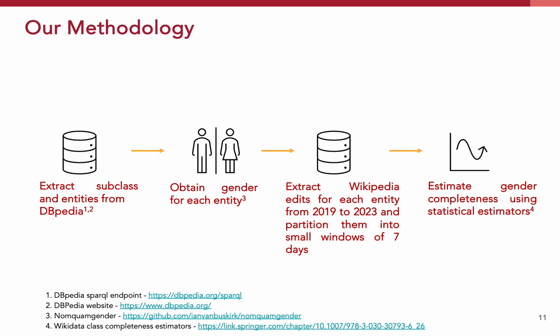Talking about our research methodology, our research follows a structured approach to measure gender representation. We first started with collecting subclasses and entities from DBpedia, which is a structured content dataset derived from Wikipedia. Since DBpedia data do not include gender information of an entity, we relied on an open source tool called Nomquam Gender. With this tool, we can predict the gender of people from their names. We then extracted Wikipedia edits for each entity for a duration of 5 years, from 2019 to 2023. The edit history was then partitioned into small windows of 7 days for granularity. For each window, we estimate gender completeness using statistical estimators and report the largest value among all windows for each estimator.